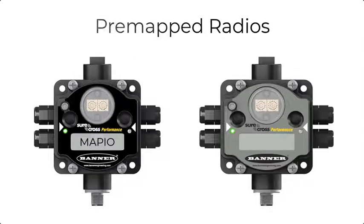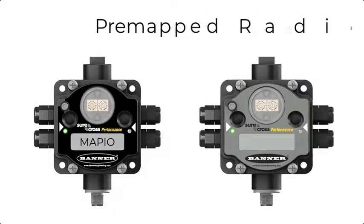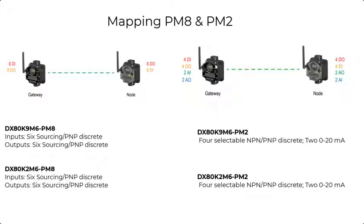Hello and welcome to the pre-map radio tutorial video. In this video, I'll show you how to change the I.O. mapping for pre-map gateway and nodes without software. Our pre-map radios ending in PM8 have six discrete inputs and outputs. Our PM2 series has a mixture of four discrete and two 0 to 20 milliamp inputs and outputs.